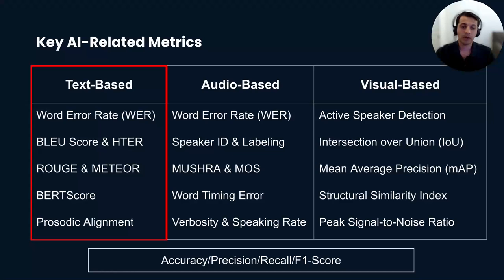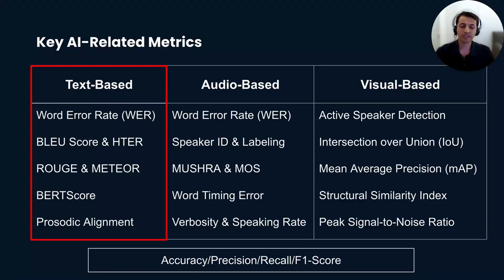BLEU (Bilingual Evaluation Understudy) score is used for tasks like machine translation or text generation, where we compare AI-generated text to human-generated reference text. Another popular translation metric is HTER, Human Targeted Translation Error Rate, which serves as a proxy of human translators' efforts to post-edit machine translation output.